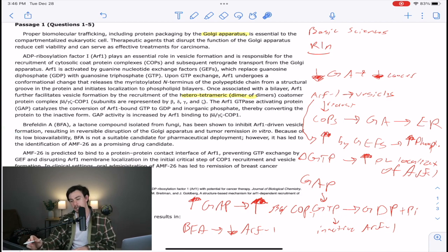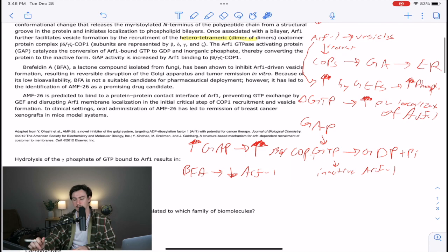Because of its low bioavailability, BFA is not a suitable candidate for pharmaceutical deployment. However, it has led to the identification of AMF26 as a promising drug. So they're saying it kind of works, but we just don't have a lot of it. Maybe that's a question they ask, but probably not.